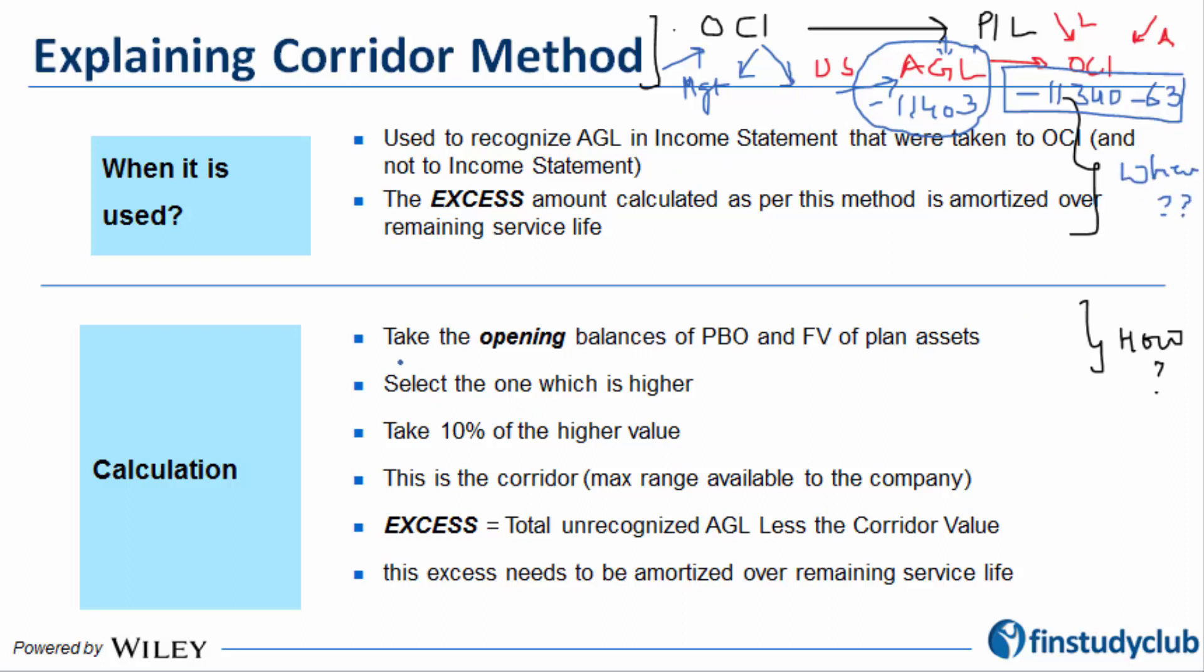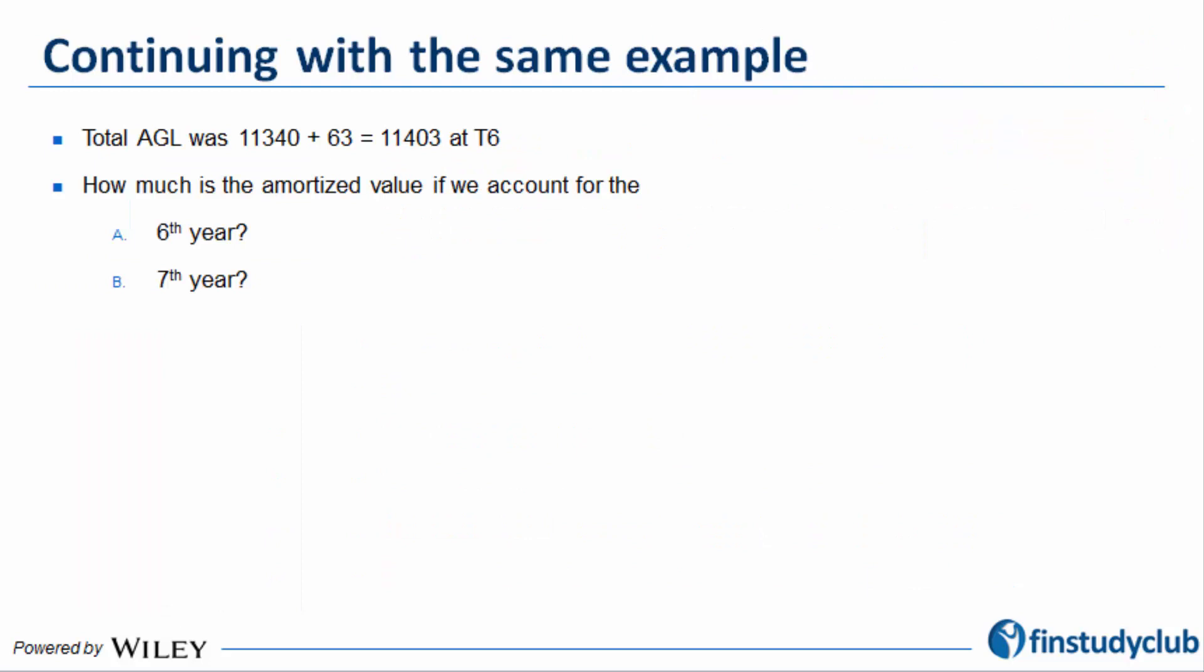That's the answer to when. How is the number that you have to understand with the help of an example, and I'm going to continue the same case that we have been following so far. The total AGL was because of liability and again a loss because of the asset, which could be plus or minus. There is a total loss of 11,403 which is lying in AGL pending amortization under OCI. The question is, what is and how much will you amortize for the sixth year?